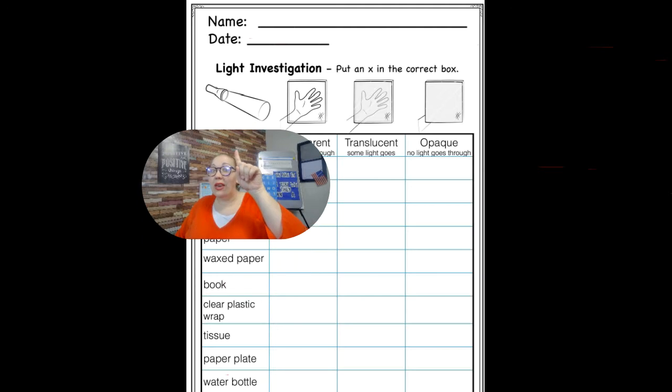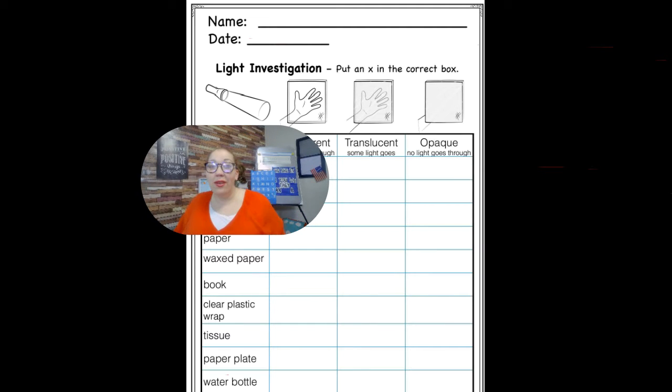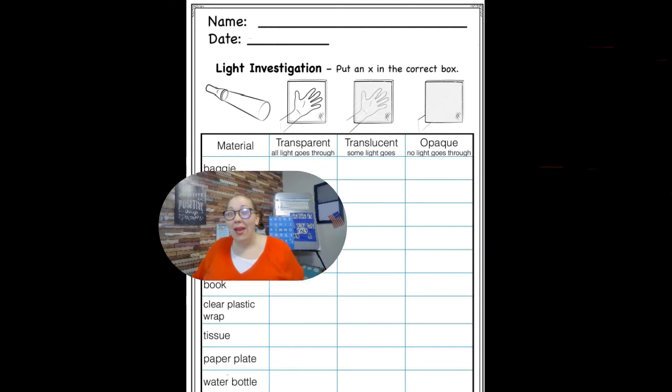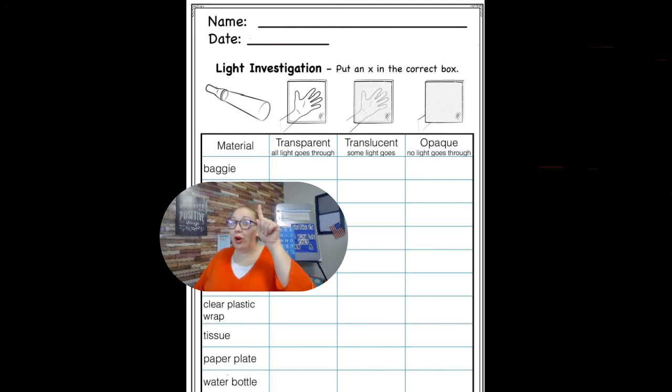Then we are going to need a light source, so a flashlight, and you're going to explore all these different items. So you're going to look and get a baggie from your kitchen, like a ziplock baggie, and you're holding your light source up to it.